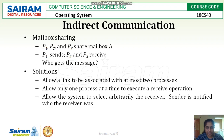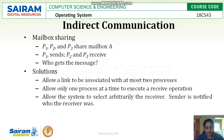All processes sharing the mailbox can receive messages, but a process will not know who is getting or sending the message. Solutions include: allowing the link to be associated with only two processes at a time; not allocating a mailbox to more than two processes at a time; allowing only one process at a time to execute the receive operation to avoid ambiguity; or allowing the system to select the receiver and notify the sender who the receiver was.